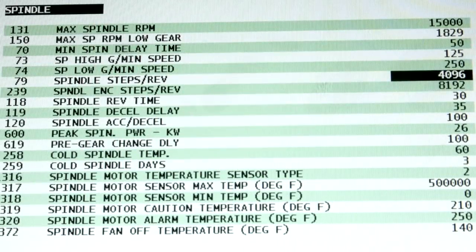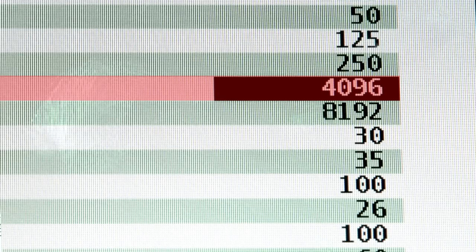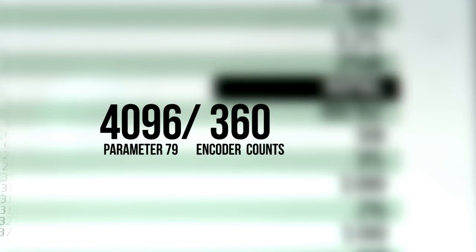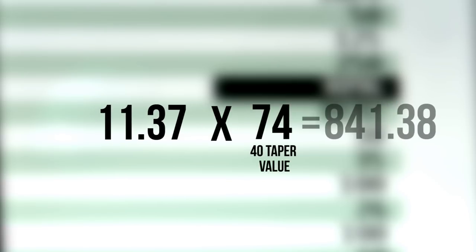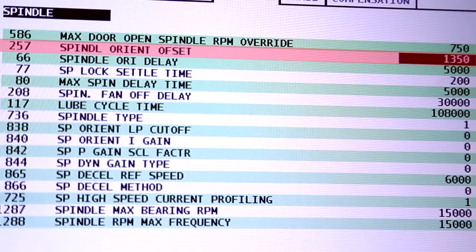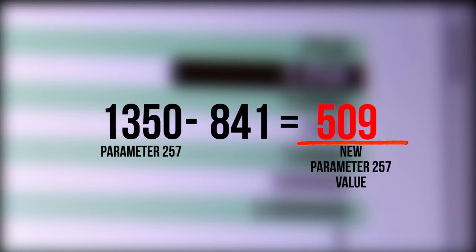Now to calculate the correct location of the spindle drive dog, divide the value of parameter 79 by 360 which is the number of encoder counts per degree of the spindle rotation. Multiply the value by the value of 74. Round up to the nearest whole number. Now subtract that value from the value in parameter 257. This will be the value for the new spindle orientation offset.